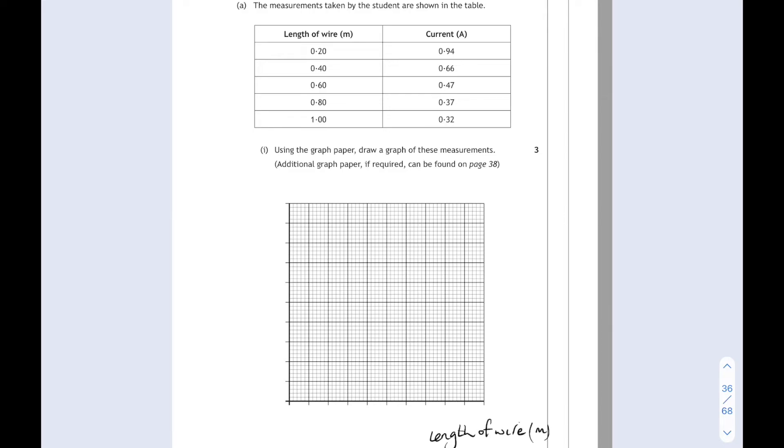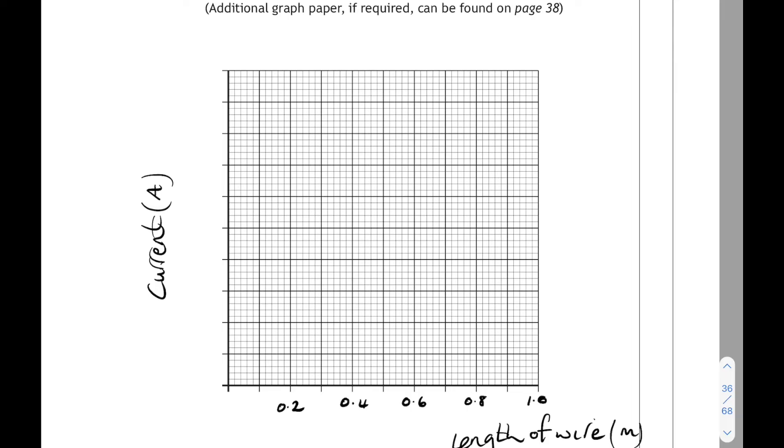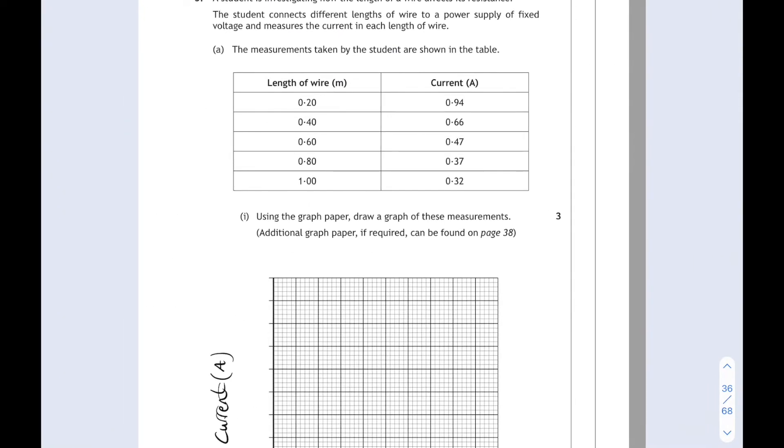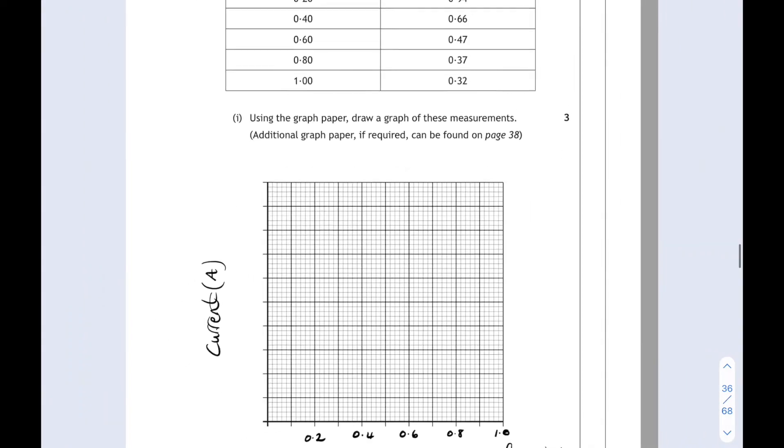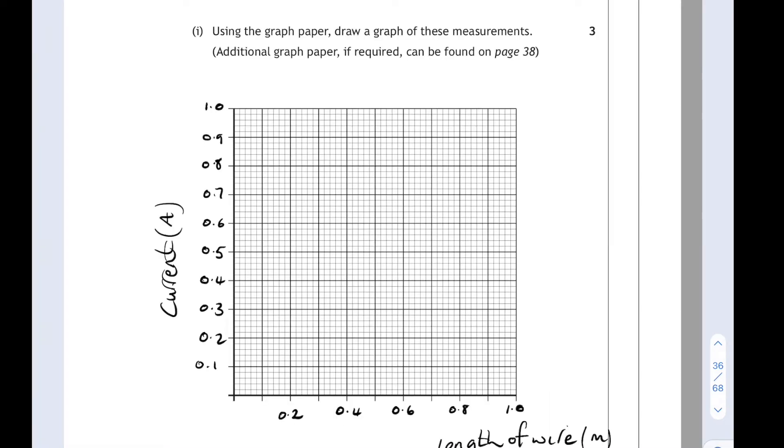The x-axis is the length of the wire in meters and the y-axis is the current in amps. Use exactly the same headings as in the table. On the x-axis, we need to go up to 1 meter. On the y-axis, our highest current is 0.94. Let's go up in 0.1s and we can go up to 1 amp there.